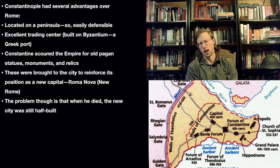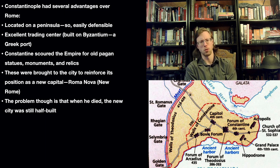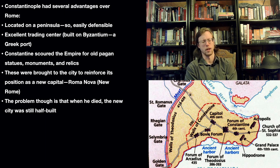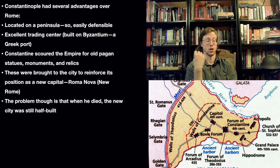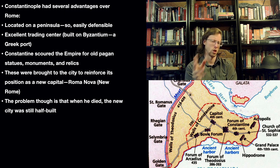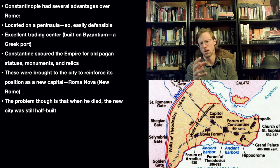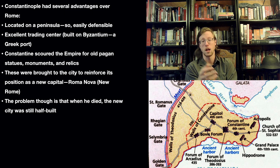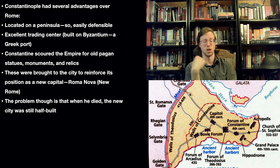This is a rough map of what the city looked like between the 4th and 6th centuries. The site has multiple advantages for a capital: it's located on a peninsula, so it's easily defensible; it's built on a trading port, so it's good for trade. It's more centrally located in the east than Rome was, making it easier to administer those areas. He also brings Christian relics and material to reinforce its position as the new capital.